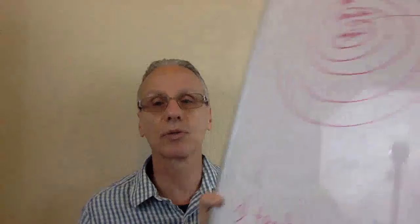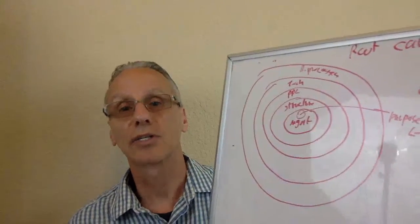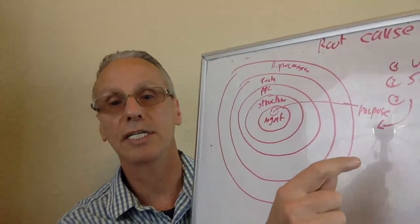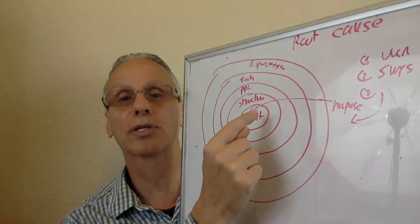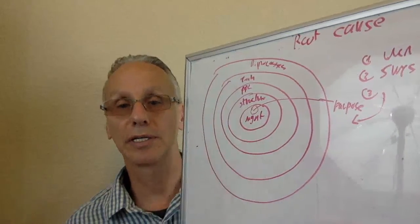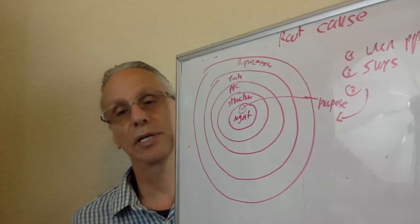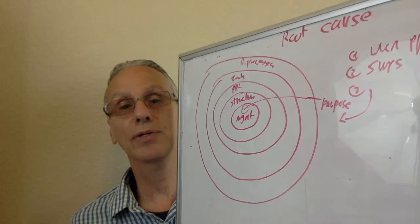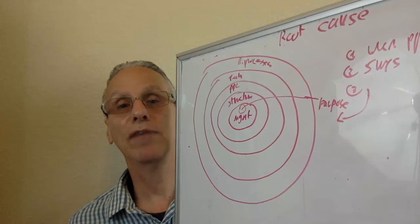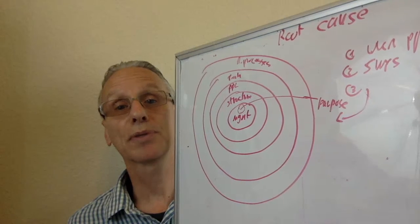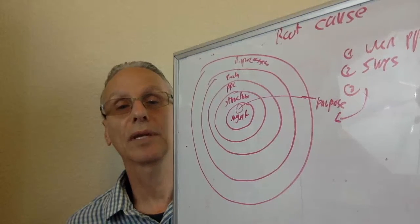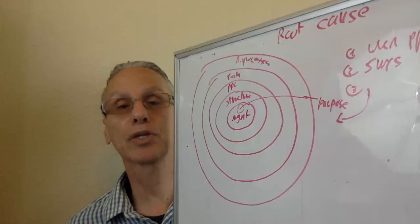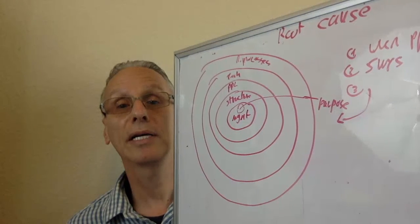Let me try to show you it visually so it will be easier to explain. Here you can see the model — the five layers. In the middle there is the purpose, then management, structure, people, technology, and business processes. What I do with this model is: if I have a problem in a certain layer, I always go three layers down. So if I have a problem with business processes, I go to technology, then people, and I try to stop there. I use the five whys, but I make sure that the last why lands on the people layer.